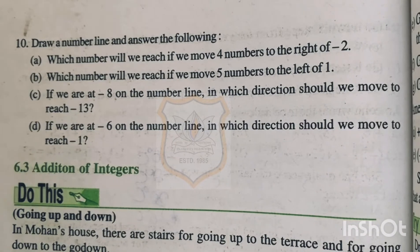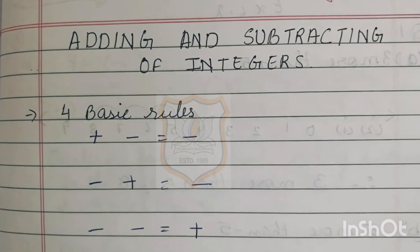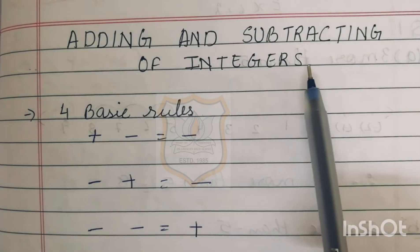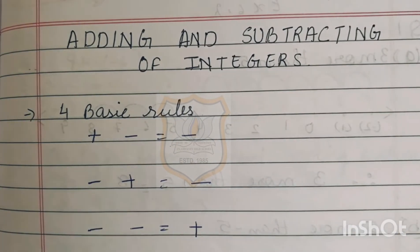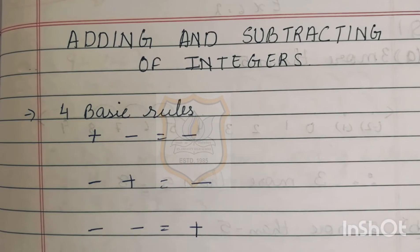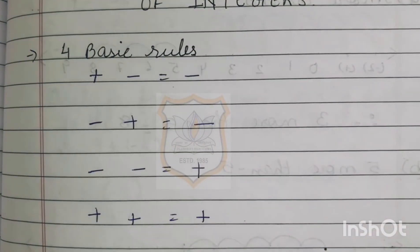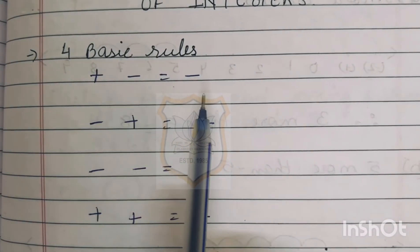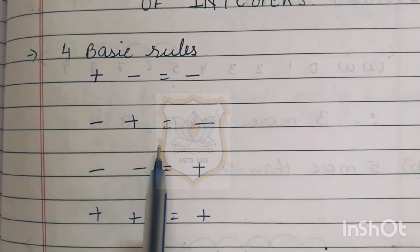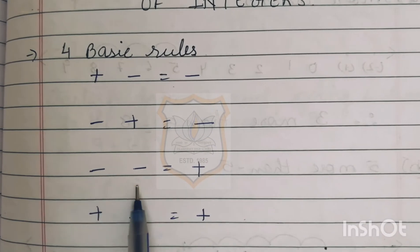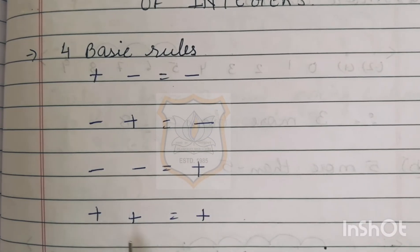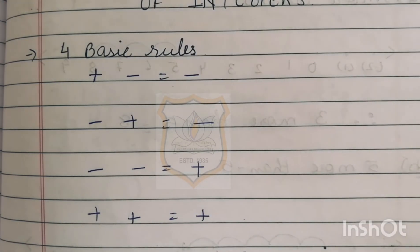With this we end exercise 6.1. Our next topic is adding and subtracting of integers. For adding and subtracting integers we have to follow four basic rules: plus and minus equals minus; minus and plus equals minus; minus and minus equals plus; plus and plus equals plus.